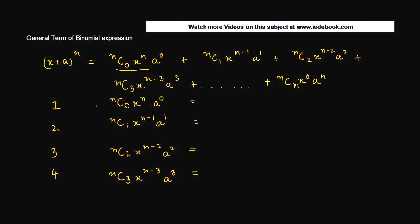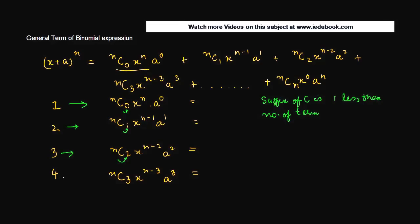If you notice, there are some common properties here. The suffix of C is 1 less than the number of the term. So for the first term it is 0 (which is 1 minus 1), for the second it is 2 minus 1 which is 1, for the third it is 3 minus 1 or 2, and for the fourth it is 4 minus 1 or 3.